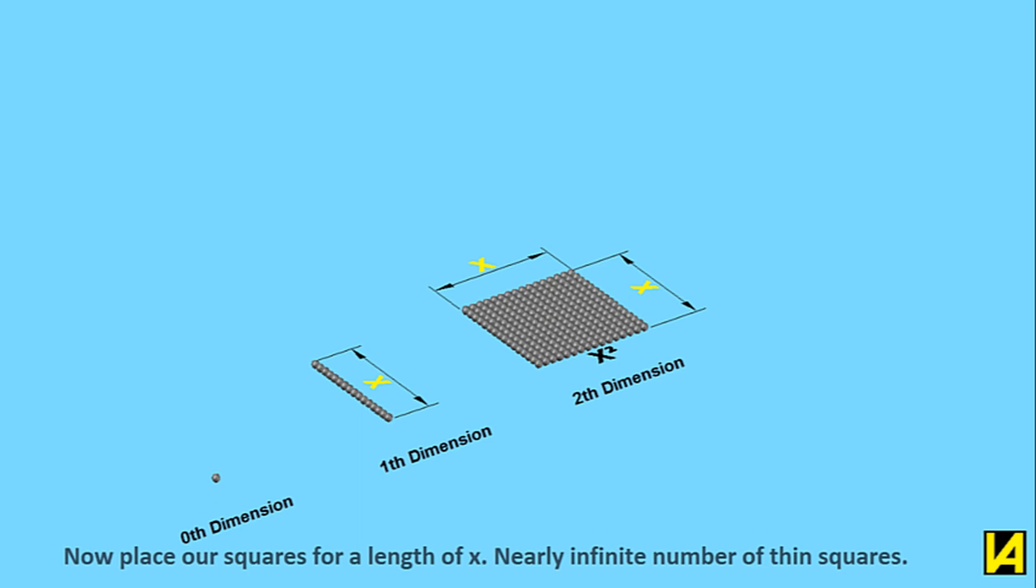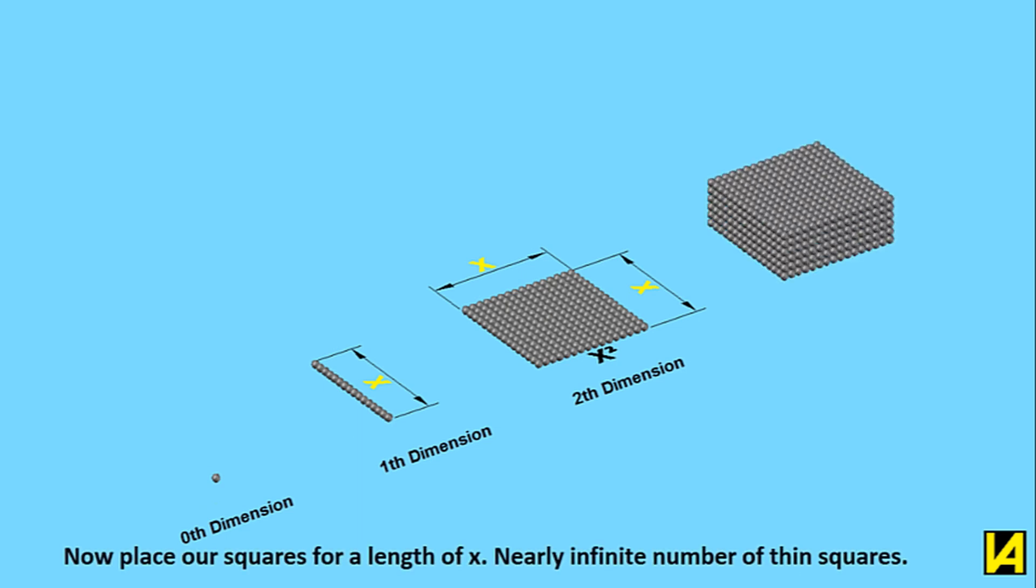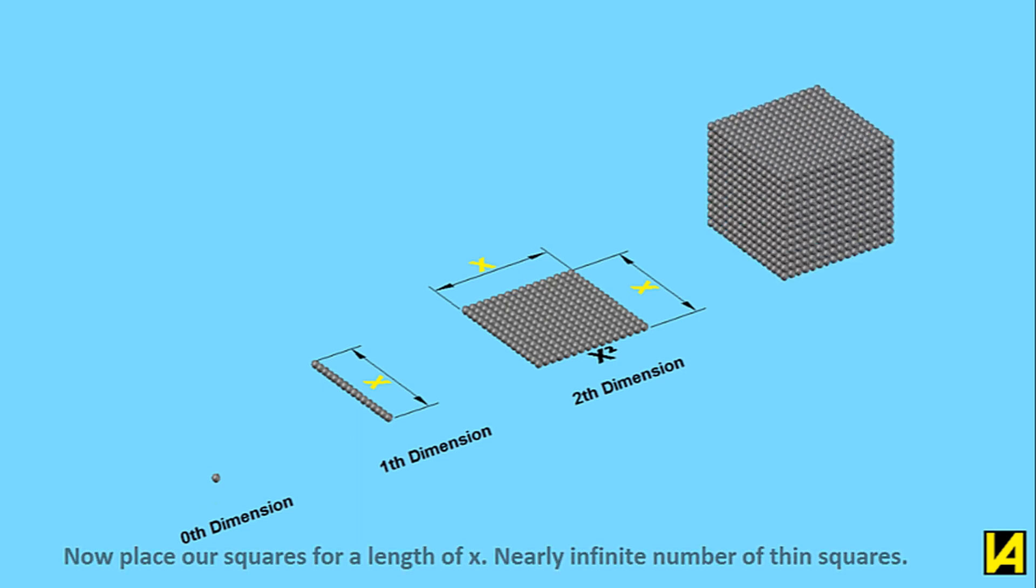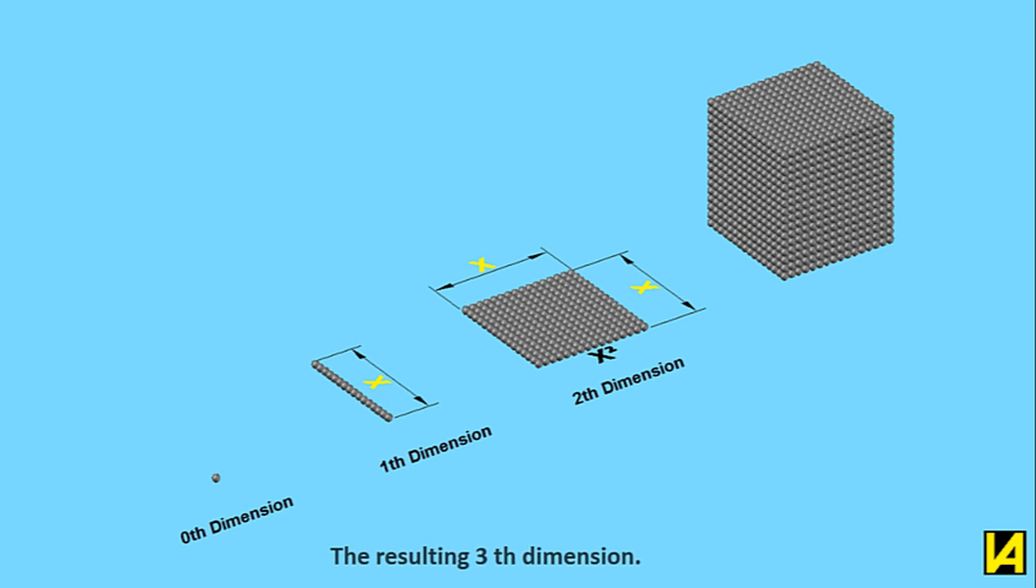Now place our squares for a length of X, nearly infinite number of thin squares. The resulting 3D dimension.